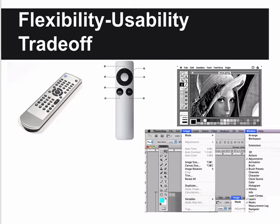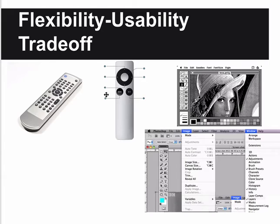The flexibility-usability tradeoff: some things are very flexible, like a complex remote with lots of functions, while the Apple remote has only a few buttons so you can't do as many things - but it's easy to use. That's the basic tradeoff. This is why we use expert modes sometimes - you could imagine an Apple remote that flips open to reveal thousands of buttons, but Apple doesn't want users to be experts. Hiding things in various menus is another way of dealing with this tradeoff.